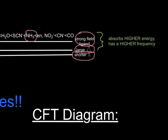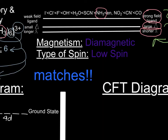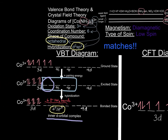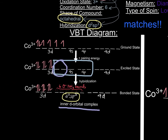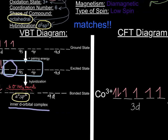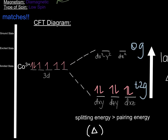When referring to the chart one last time, as stated before, NH₃ is a strong field ligand and has a large splitting energy, as demonstrated through the crystal field diagram. This shows that it absorbs higher energy and has a higher frequency, therefore has a shorter wavelength. Finally, in regards to magnetism, this coordination compound is diamagnetic, as shown in the valence bond theory diagram through the excited state and the bonded state, as the 3D electrons are all paired together. This is also shown in the crystal field theory diagram, as all electrons from the 3D orbital were paired in the T2G sublevel.